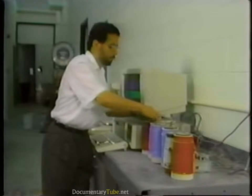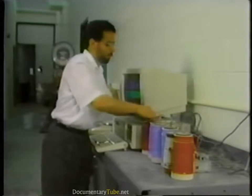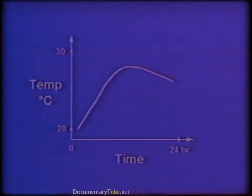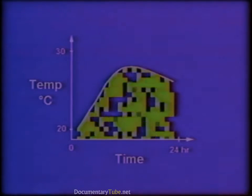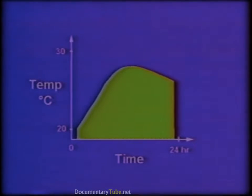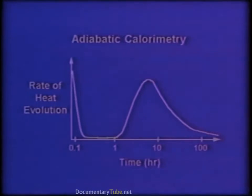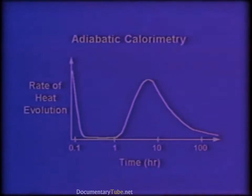The output of the thermistor can be recorded by a computer. The results of this experiment can be plotted as a curve of temperature versus time. The area under the major peak can be related to early strength development. The initial dissolution of cement produces a short release of heat shown by the first peak in the calorimetry curve.